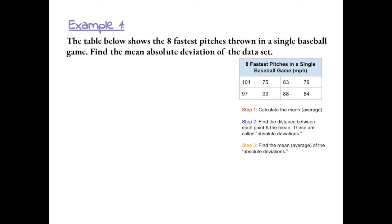Example 1: the table below shows the 8 fastest pitches thrown in a single baseball game. Find the mean absolute deviation of the data set.